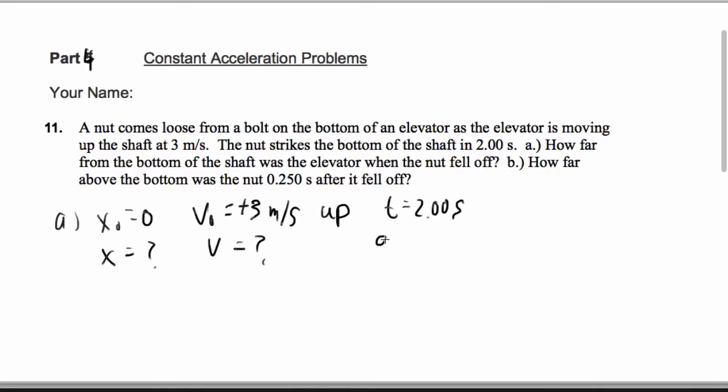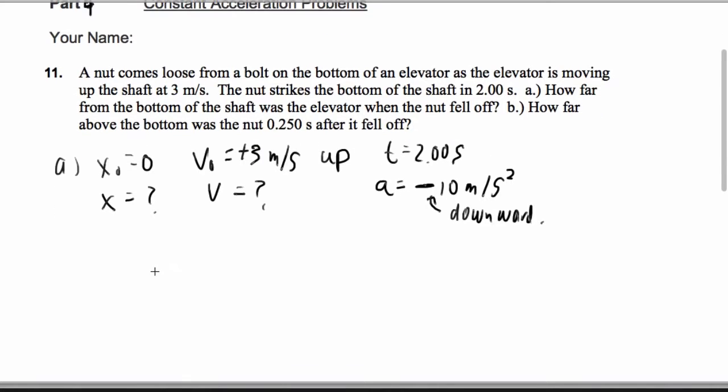Now one other thing. The acceleration is 10 meters per second squared, and I'm going to say negative to indicate that it is downward acceleration. So for part A, we want to know how far from the shaft the elevator was when the nut fell off.